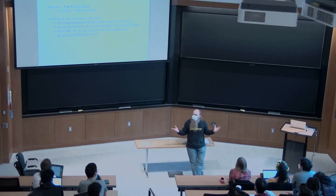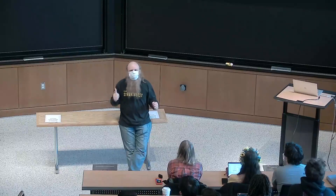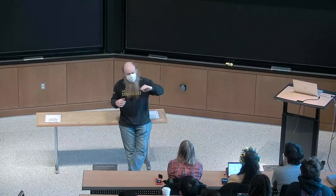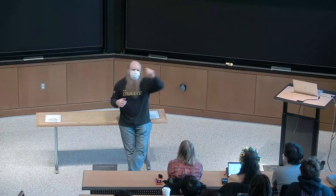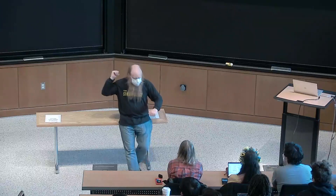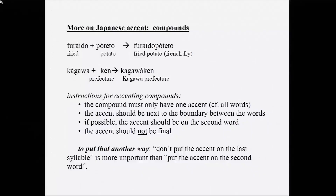Does anybody still read Isaac Asimov? His robot stories feature robots governed by ranked laws. The second law must be obeyed unless it conflicts with the first. It's like that here: Japanese wants the accent on the second word and next to the boundary, but also wants it not to be final. 'Don't put accent on the last syllable' is more important than 'put accent on the second word.'